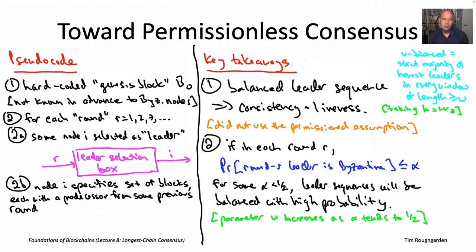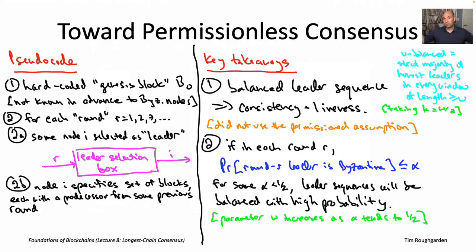The more general principle is that in sufficiently long windows, you get basically proportional representation of honest and Byzantine nodes. If more than half the nodes are honest, then in sufficiently large window sizes you'll also see more than half honest leaders. How big the window needs to be depends on the margin — how close alpha is to one half. But for any fraction alpha less than 50% Byzantine nodes, there exists a sufficiently large window size such that the W-balancedness condition holds with high probability.